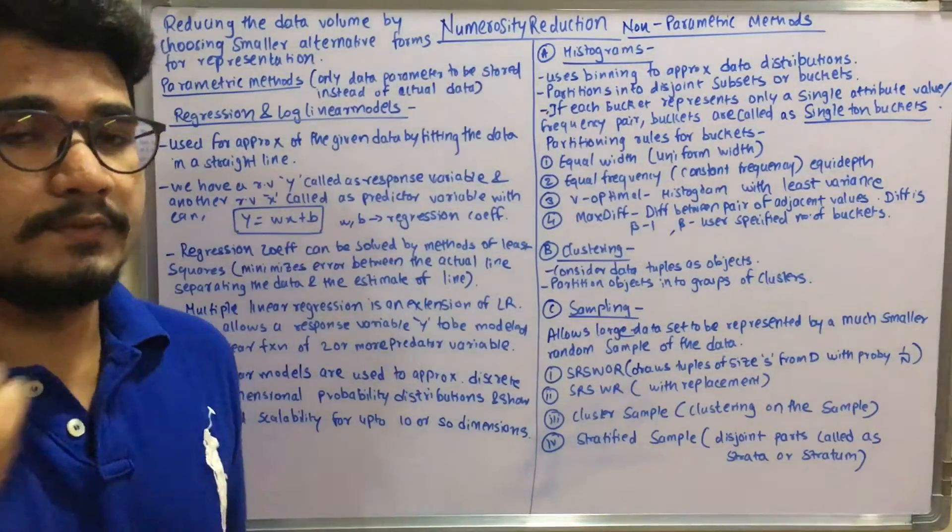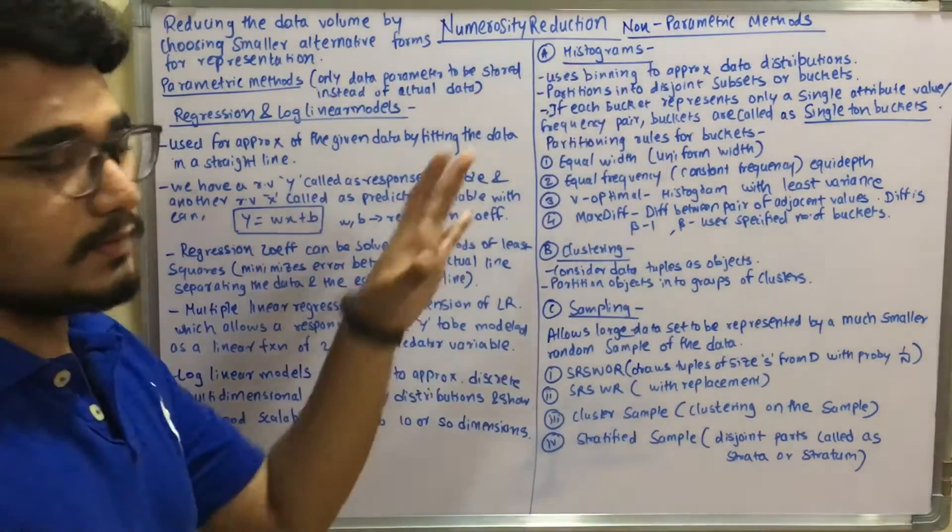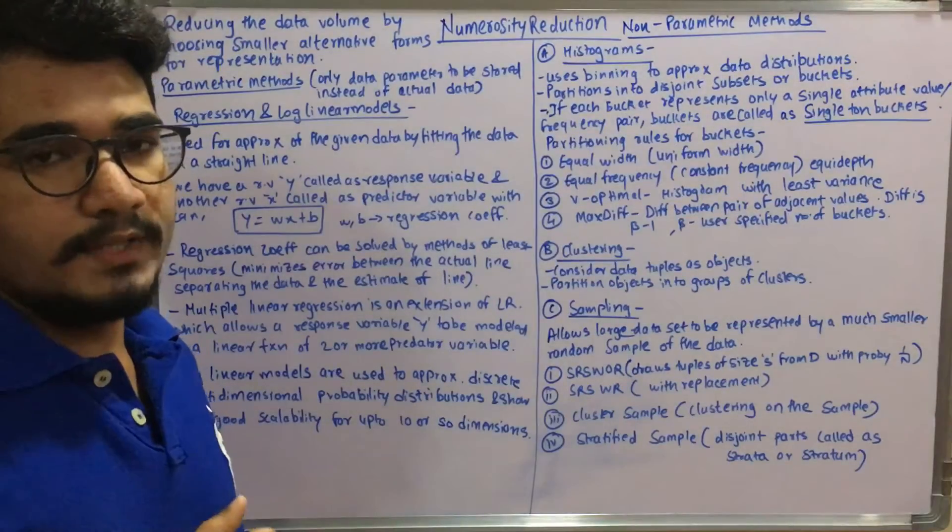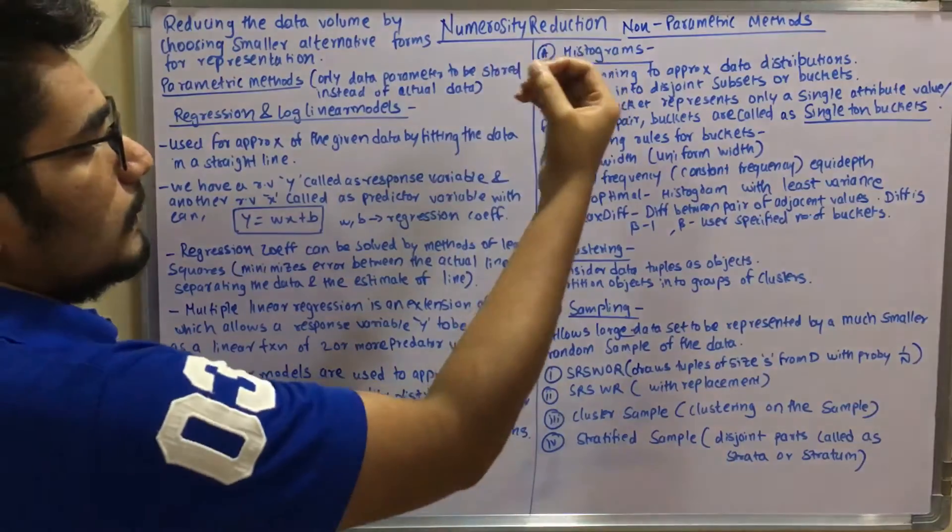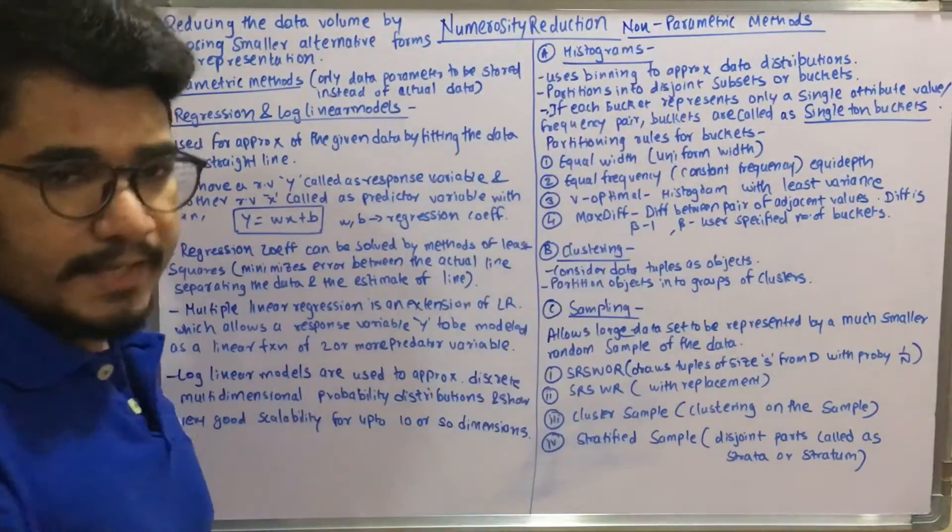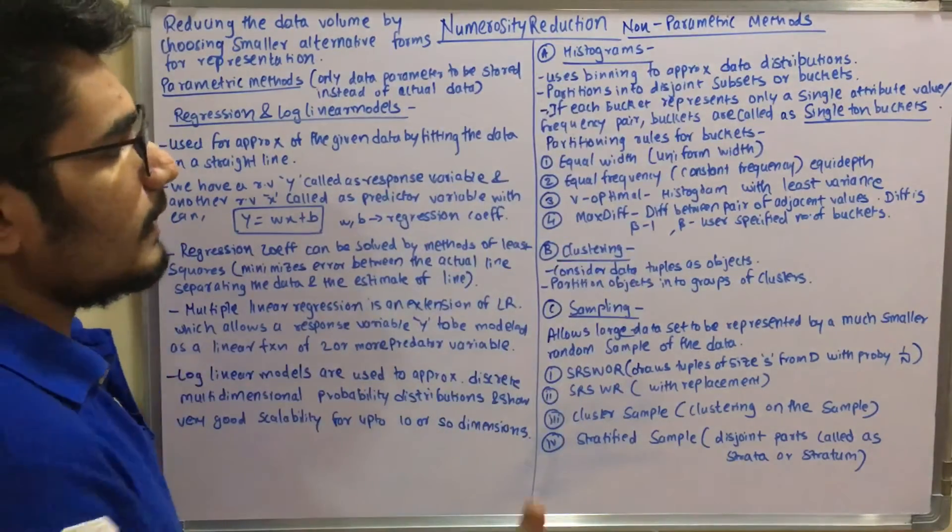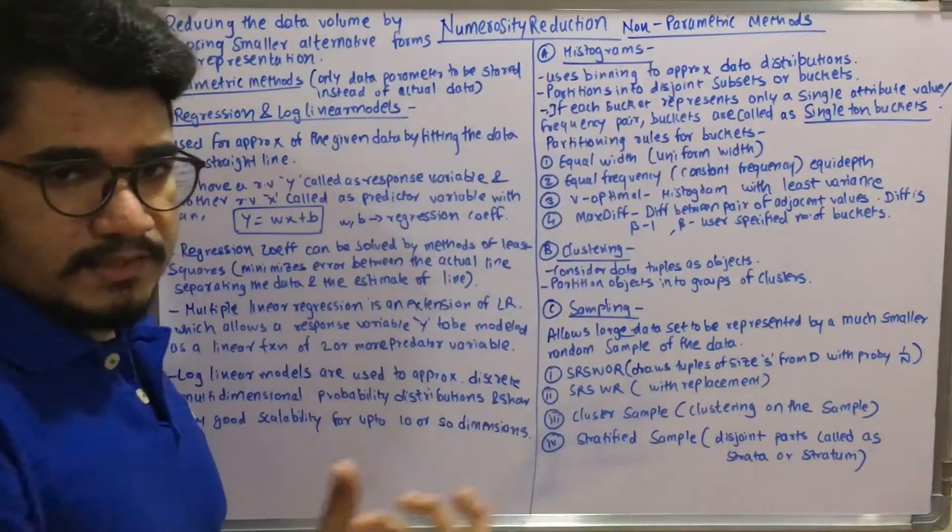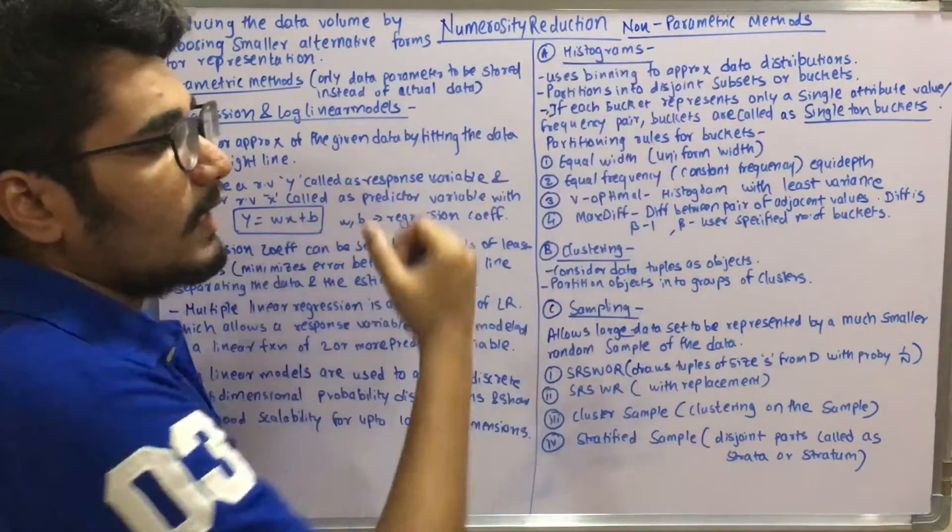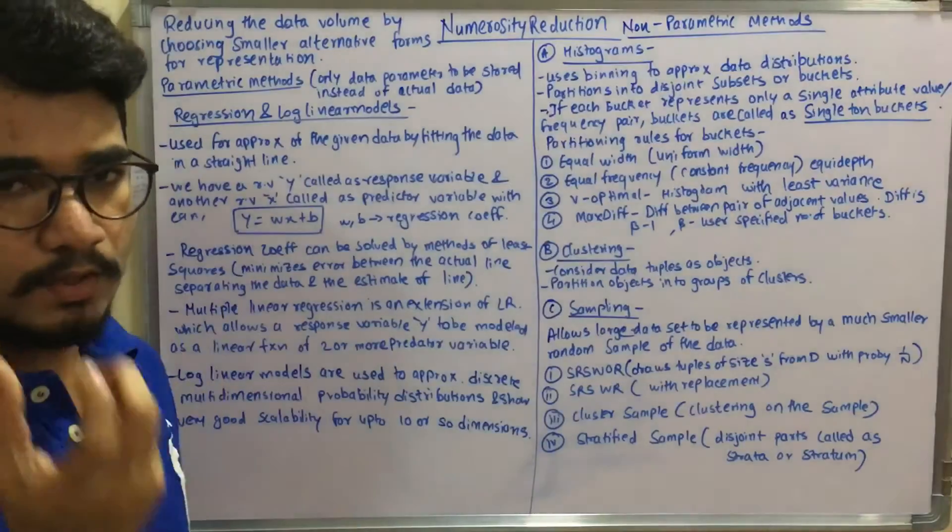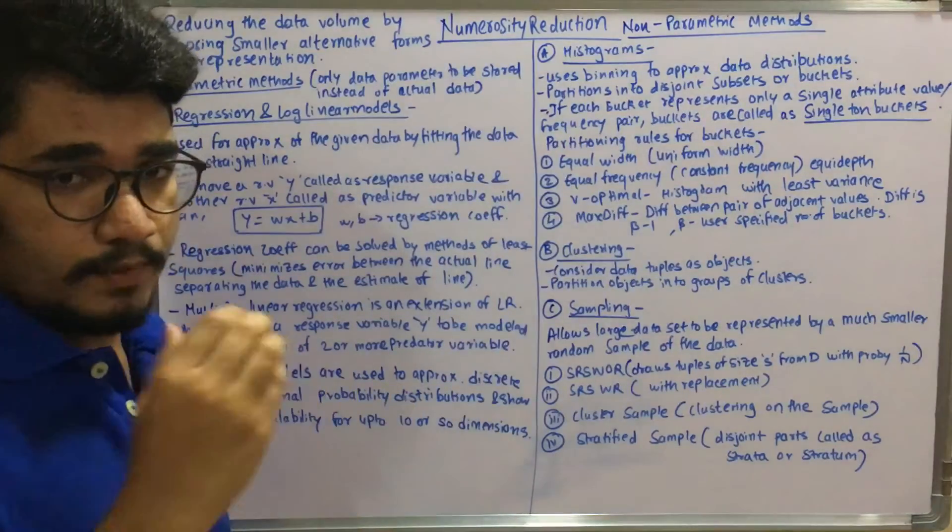Some log linear models are also used to approximate discrete multidimensional probability distributions and show very good scalability for up to like 10 or so dimensions. Like if you have 10 or even 15 or 20 dimensions, then you can use log linear models to represent it so that it can reduce to a particular level. These are the models for parametric methods for numerosity reduction. Now we move on to the non-parametric models. In this we have three things. So let's focus on the RHS. We have basically histograms that we've already seen in data cleaning.